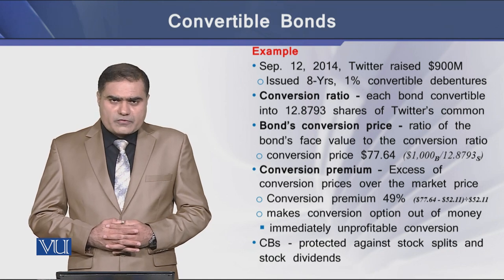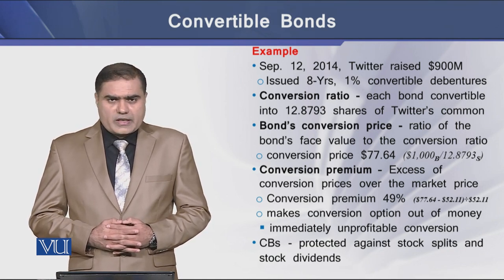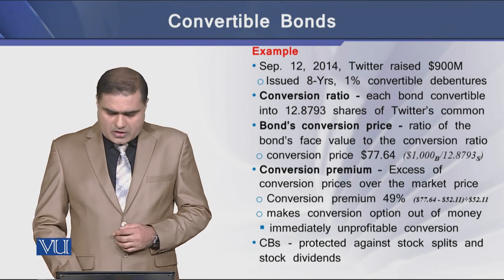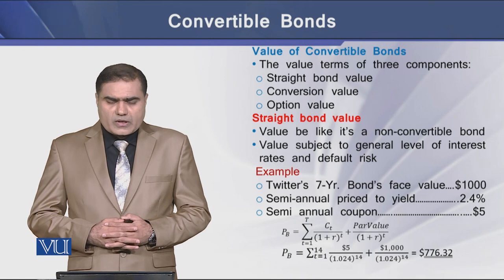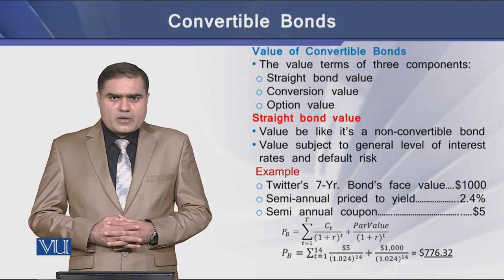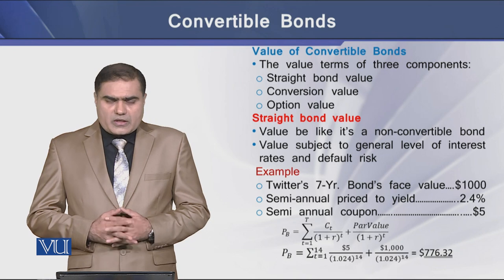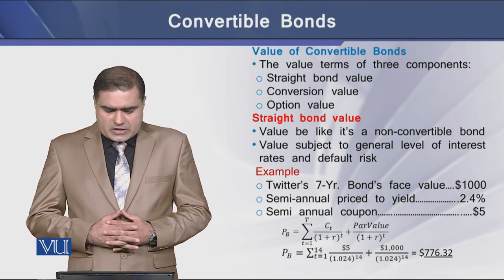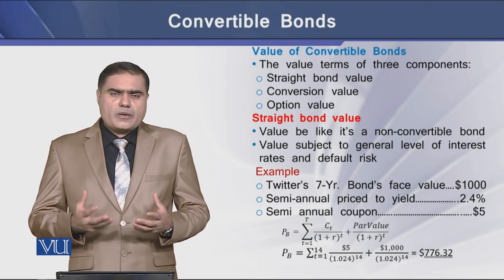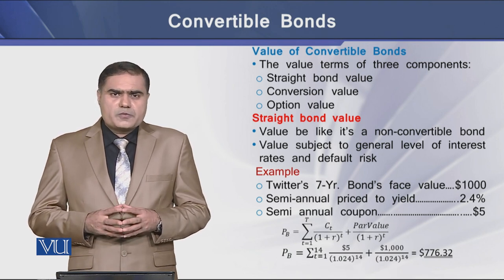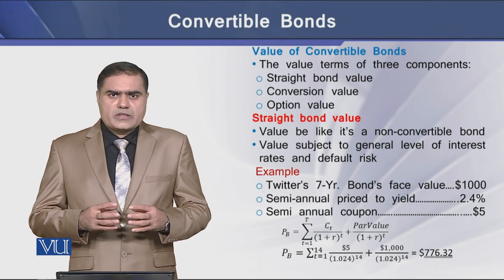Convertible bonds basically work as a protection against stock splits and stock dividends for the company. The value of a convertible bond comes from three different dimensions: the first is the straight bond value, the second is the conversion value, and the third is the option value. So the value of a convertible bond has three distinct components.